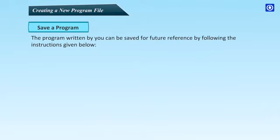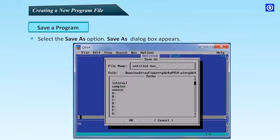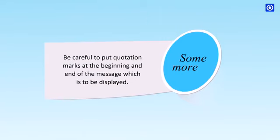Save a program: The program written by you can be saved for future reference by following the instructions given below. Click on file menu, select the save as option. Save as dialog box appears. Type the file name, click OK. In QBasic, files will be saved with .bas extension. Be careful to put quotation marks at the beginning and end of the message which is to be displayed.